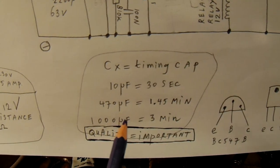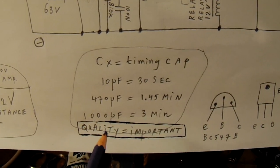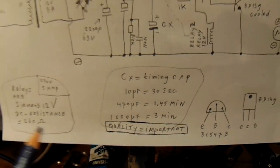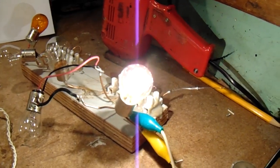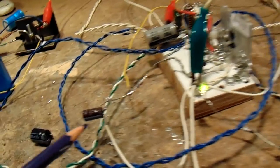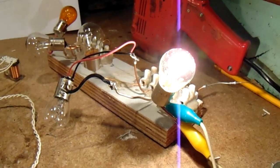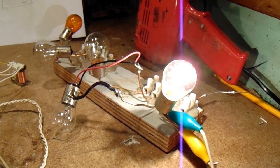The timing cap is very important. The quality is very important, because when the quality is not good enough, the timing is also not good enough. But let's demonstrate it. I push the button now, and the lamp lights up. I took here as the timing cap a 10 µF capacitor. So let's wait and see until it switches off after approximately 30 seconds.